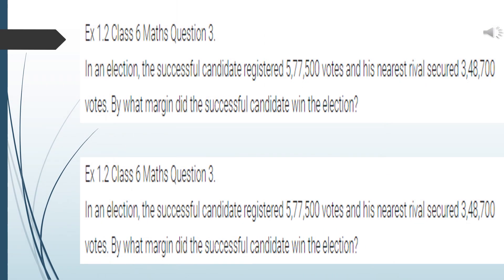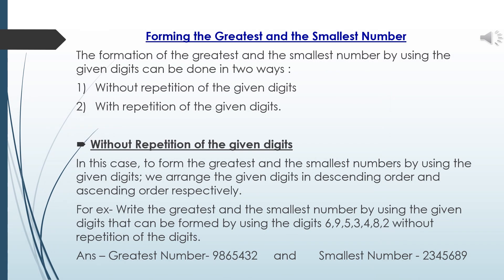Students, the next two questions are related to the previous ones, so I am giving them to you as homework — try to solve them. Now here we will study about the formation of the greatest and the smallest number. We can do it in two ways: first, without repetition of the given digits, and second, with repetition. For the first case, to form the greatest and smallest number, we arrange the digits in descending and ascending order respectively.